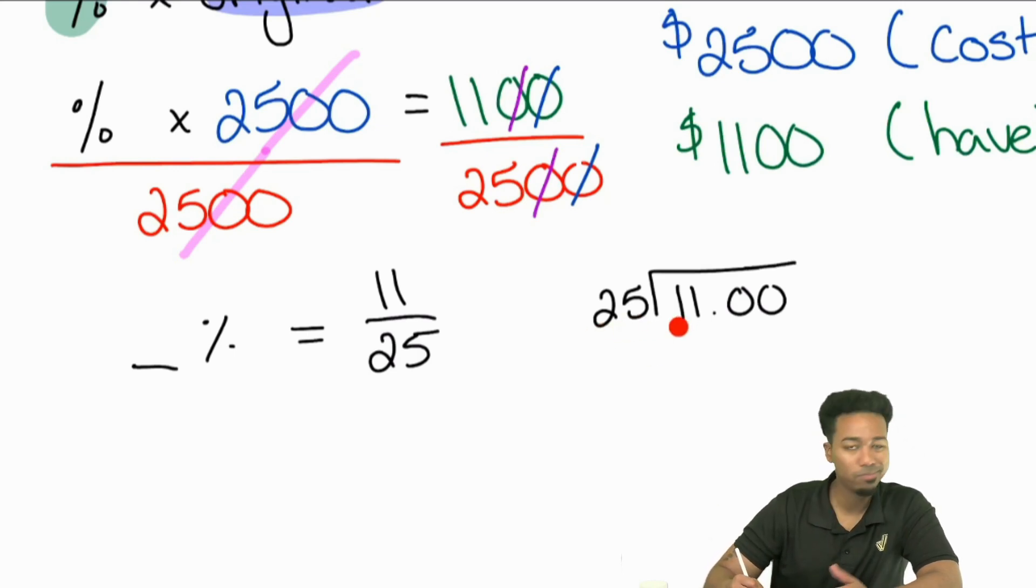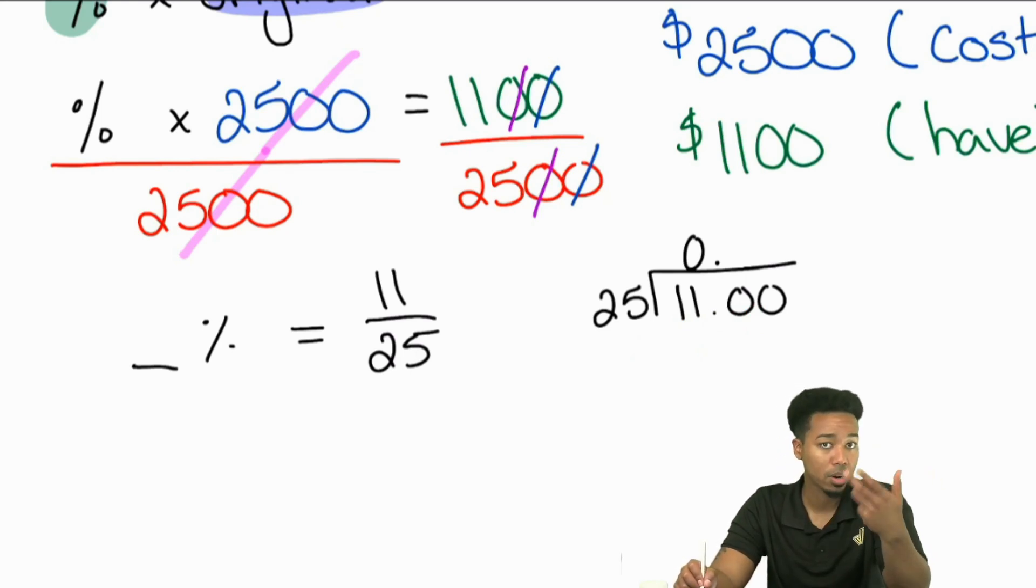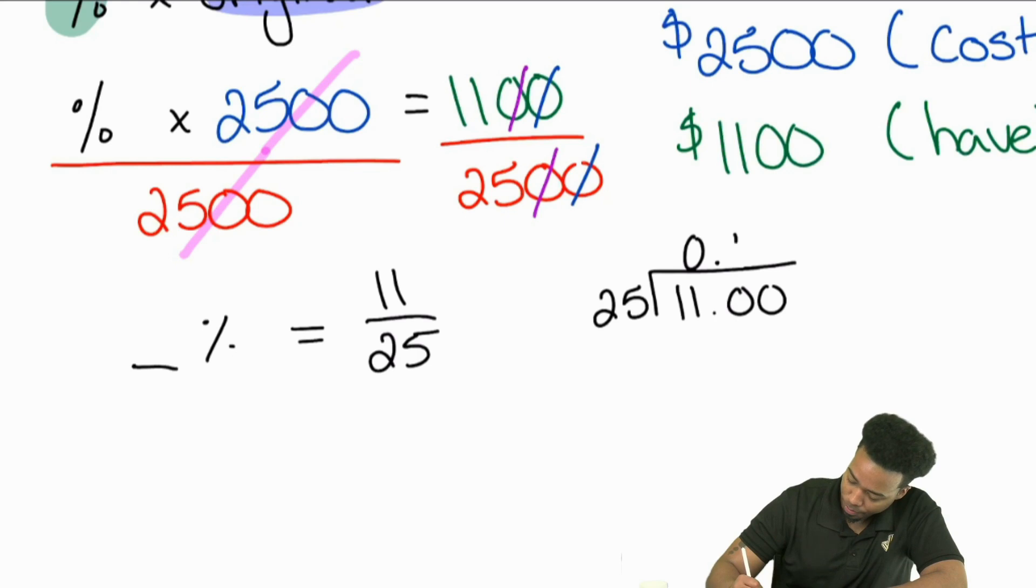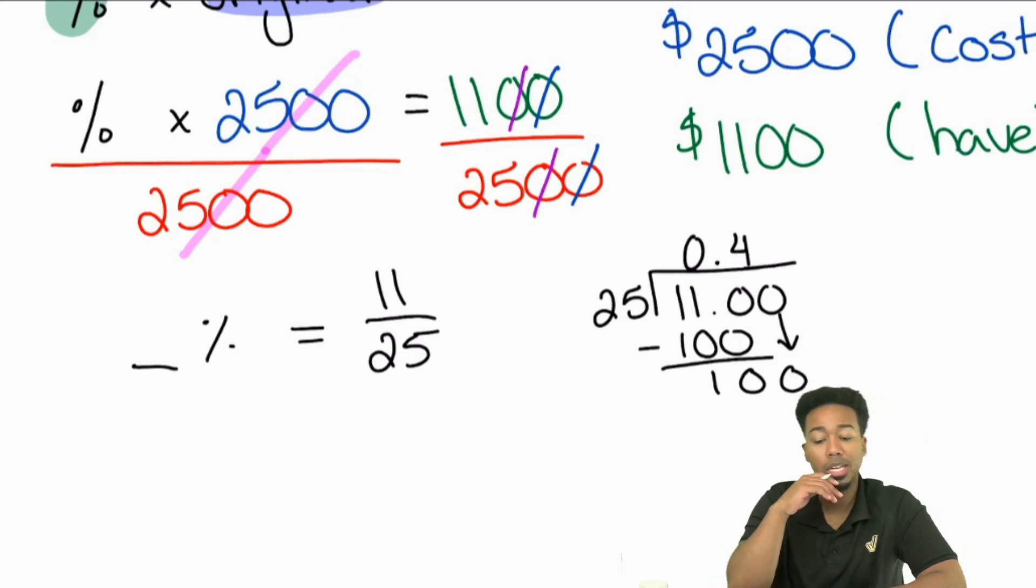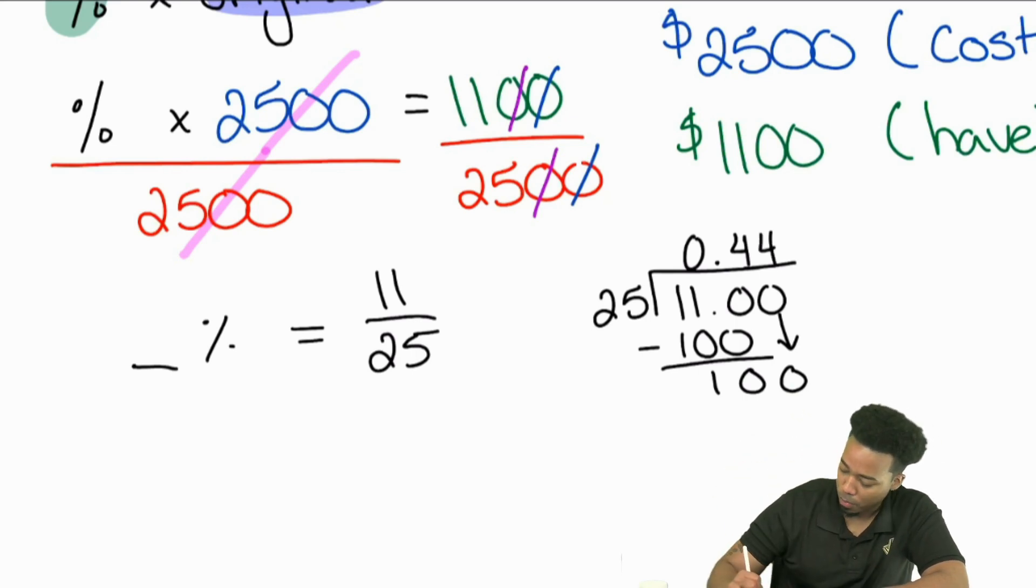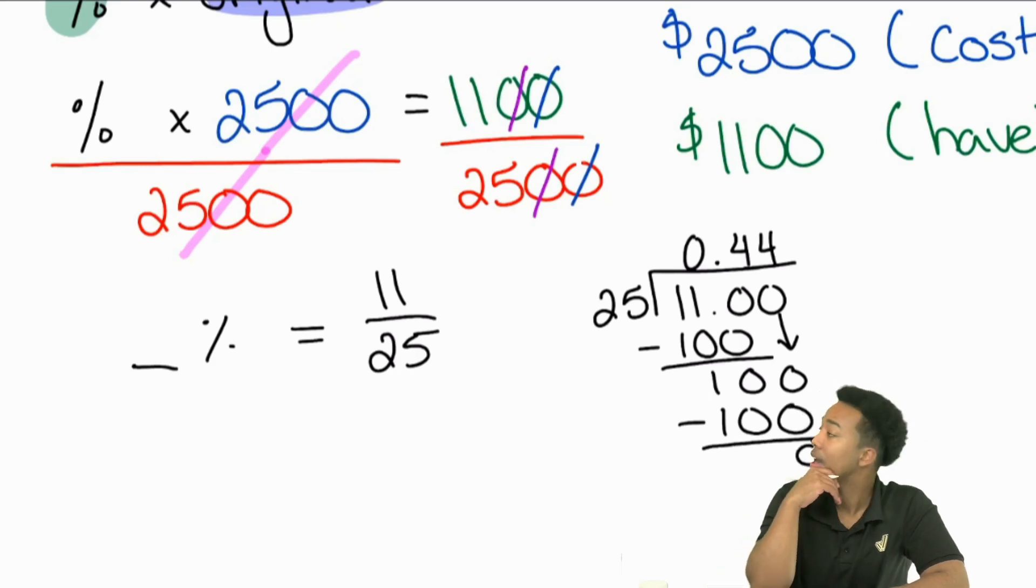So 25 goes into one, can't go. 25 goes into 11, can't go. So we have a zero before that decimal place. Then we think about 25 going into 110. 25, 50, 75, 100. So that's going to be four times, because if you do five, it's going to be 125, too much. So just going to be four, and that's going to be 100. So we subtract 100, that's going to leave 10. Drop that zero down. And now we have how many times 25 goes into 100. And that's going to be four times. So we have 0.44. That's a perfect division there. We're done.